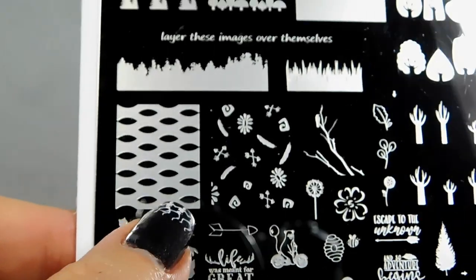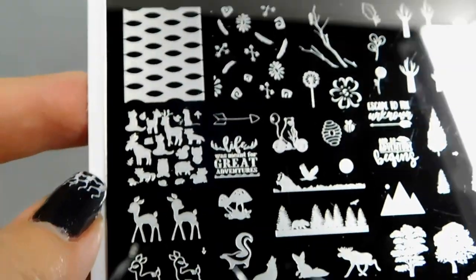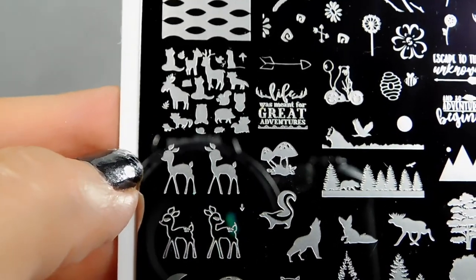Love this just for kind of a texture image. I think that's really cool. And then here's another full nail one with little moose and all kinds of fun stuff that you could just stamp very simply.